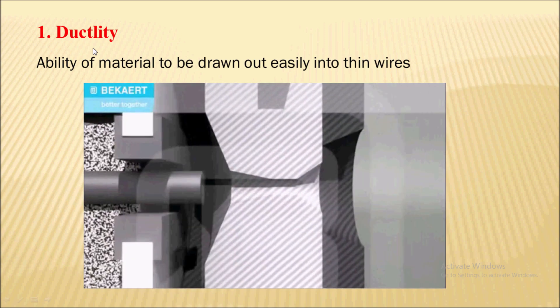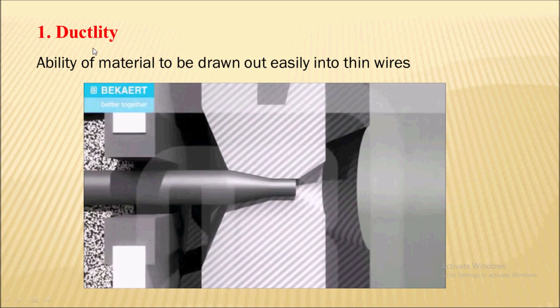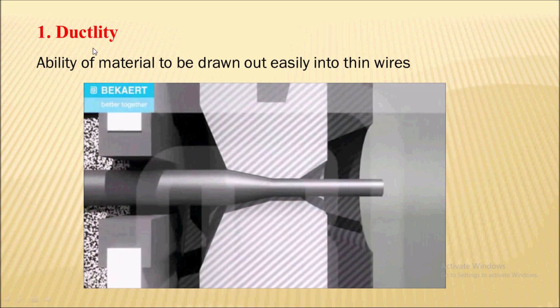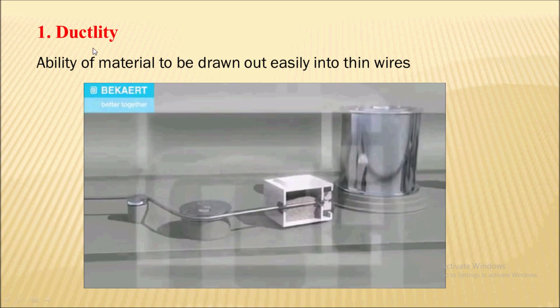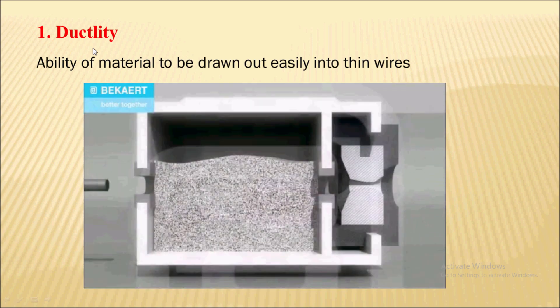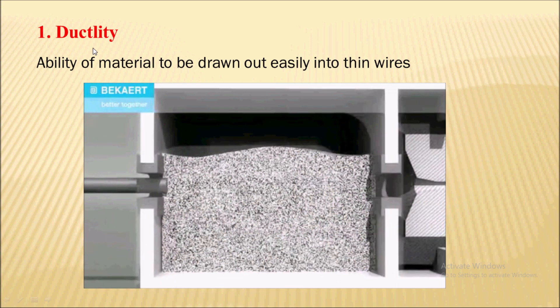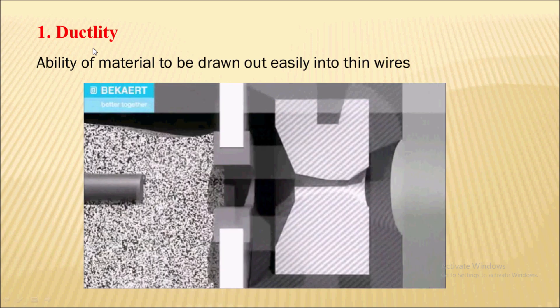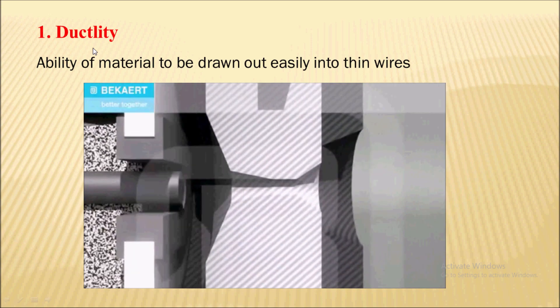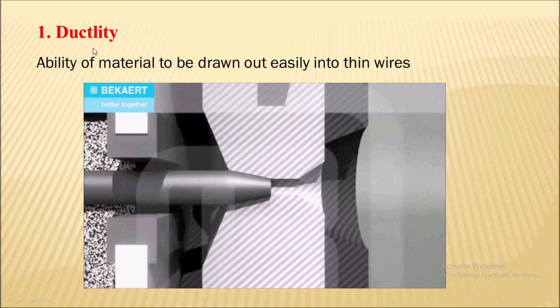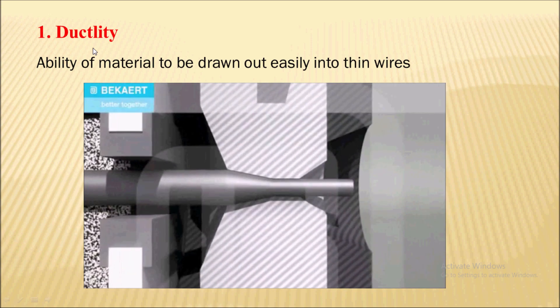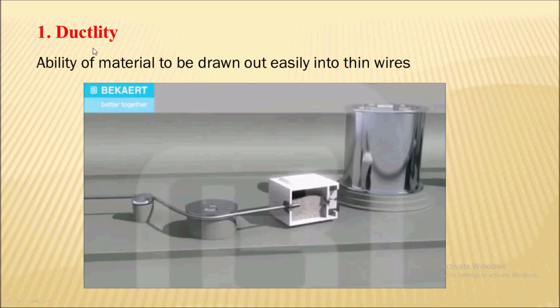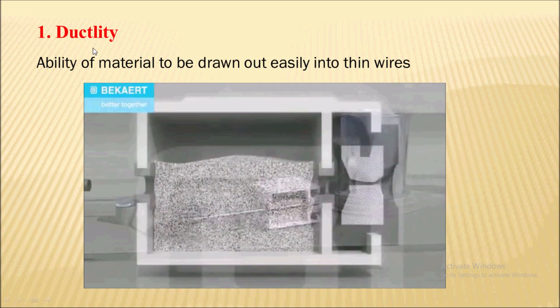Ductile material is said to have good tensile property, meaning they are good in tension. The examples of ductile materials are mild steel, copper, aluminium, etc.